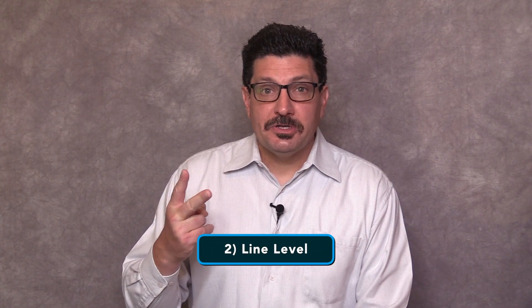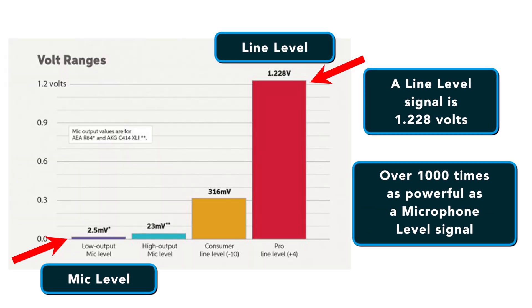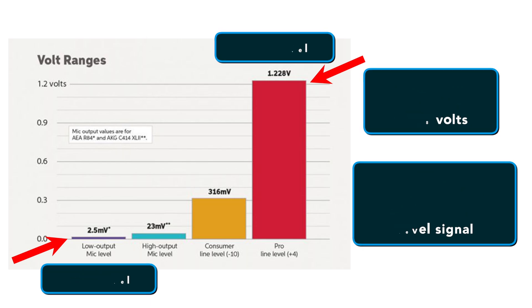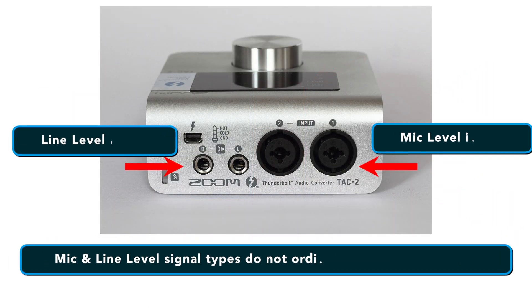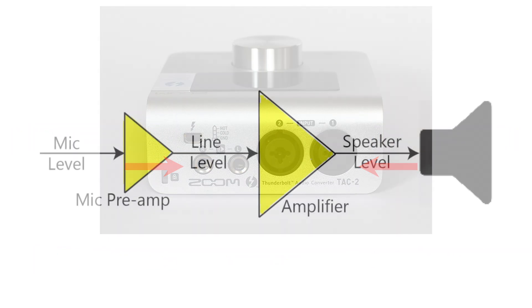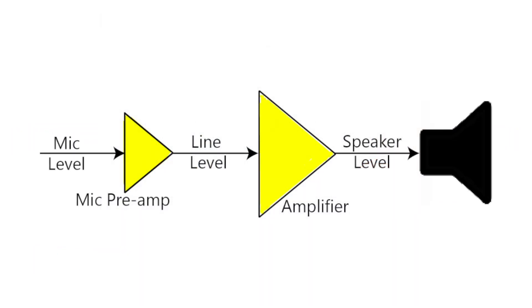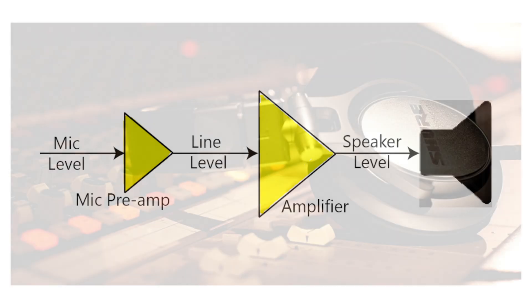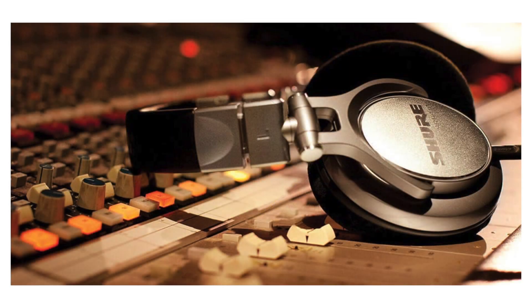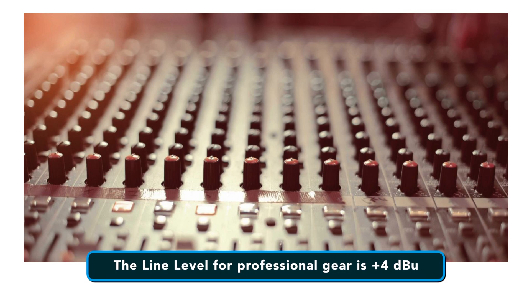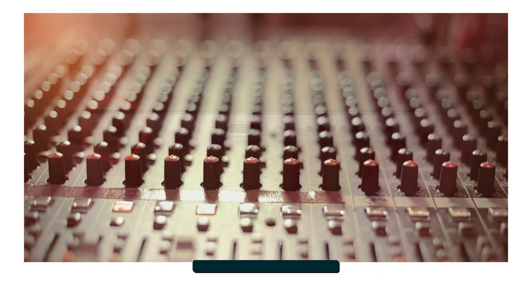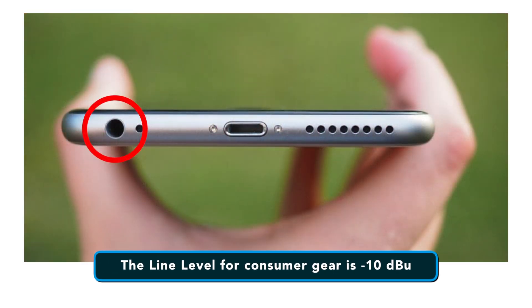Number two on our list is line level. A line level signal is about one volt, or about 1,000 times as strong as a mic level signal. The two signal types do not ordinarily use the same inputs — this signal travels from your pre-amplifier to the amplifier. There are two standard line levels: plus 4 dBu for professional equipment like mixing desks and signal processing gear, and minus 10 dBu for consumer equipment such as smartphone headphone jacks.